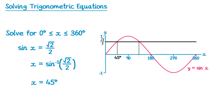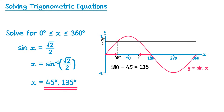We have a second solution on the right-hand side. From 0 to 45 is 45 degrees, which must be the same distance from 180 back to our solution. So we do 180 take away 45, which is 135. So we get two solutions: 45 and 135. Again, this one would be non-calculator.